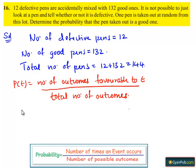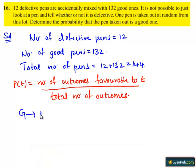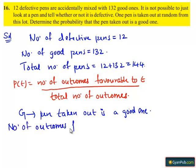Here, let G be the event that pen taken out is a good one. Then we have number of outcomes favorable to event G equals to number of good pens which is 132.